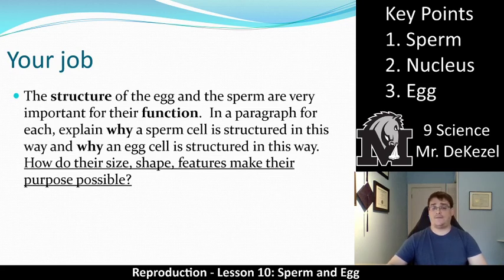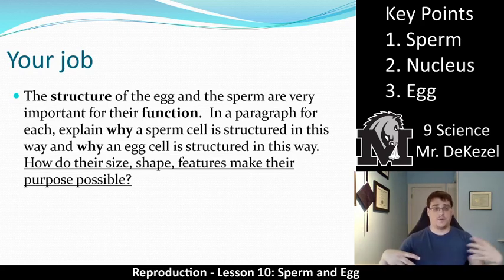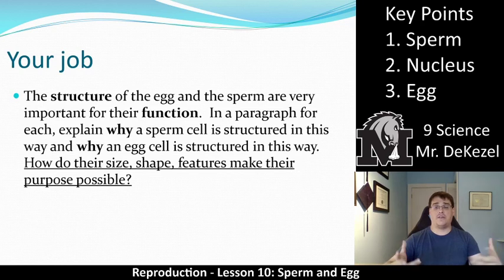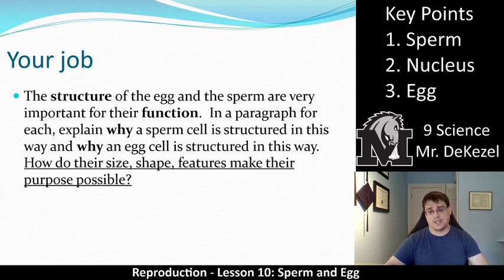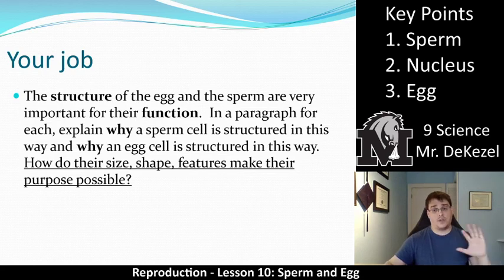How do their size, shape, and features make their purpose possible? An egg doesn't really need to move, but a sperm does — how do their structures allow for that? An egg needs to provide nutrients while a sperm doesn't — how do their structures allow for that? That's what I want you to be thinking about as you do this assignment. Thanks very much for listening, everyone. If you have any questions, please let me know, and I'll see you soon.